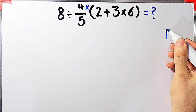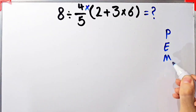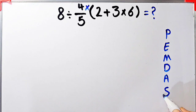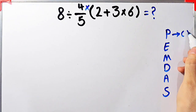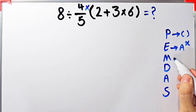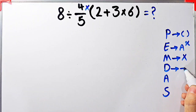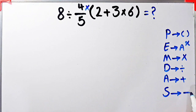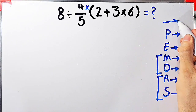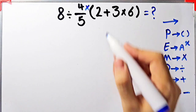To solve this question we need to follow the order of operations, which is PEMDAS. PEMDAS shows the priority of the mathematical operations, and if you don't pay attention to this rule you get the wrong answer. P stands for parentheses, E stands for exponent, M stands for multiplication, D stands for division, A stands for addition, and S stands for subtraction. Multiplication and division have the same level of priority; also addition and subtraction have the same level of priority.